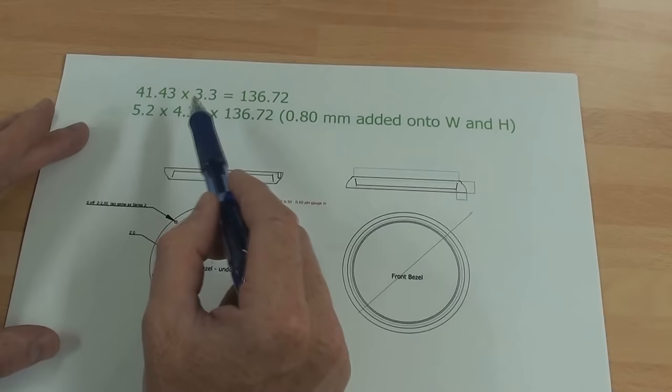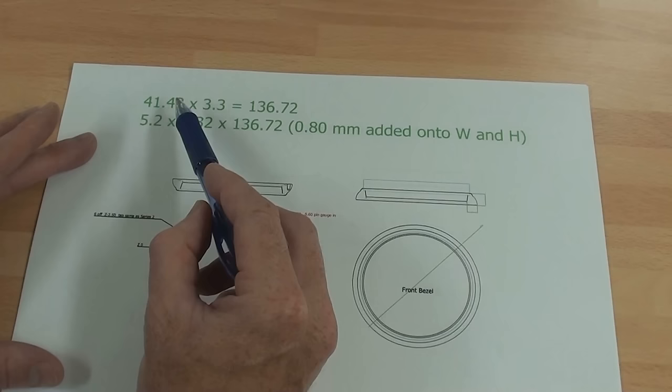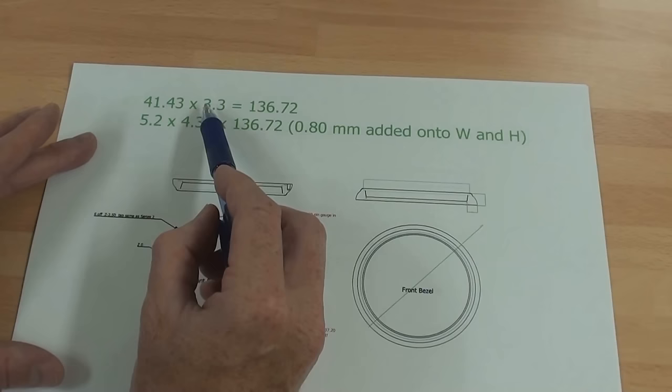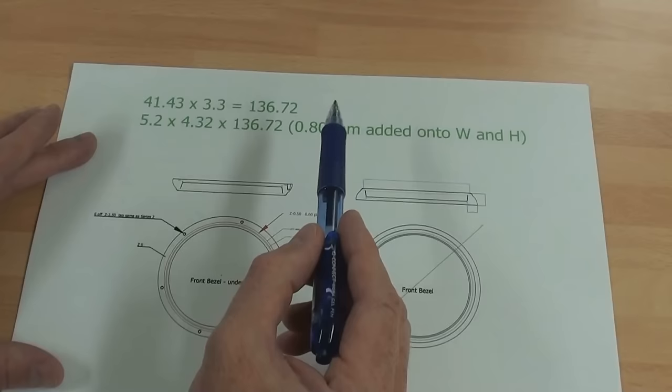When calculating the length, instead of using 3.142 times the diameter to work out the length, we always times it by 3.3. That 3.3 just gives me an extra bit of material to cut down and make sure we get the correct diameter of ring. So that's the bezel.